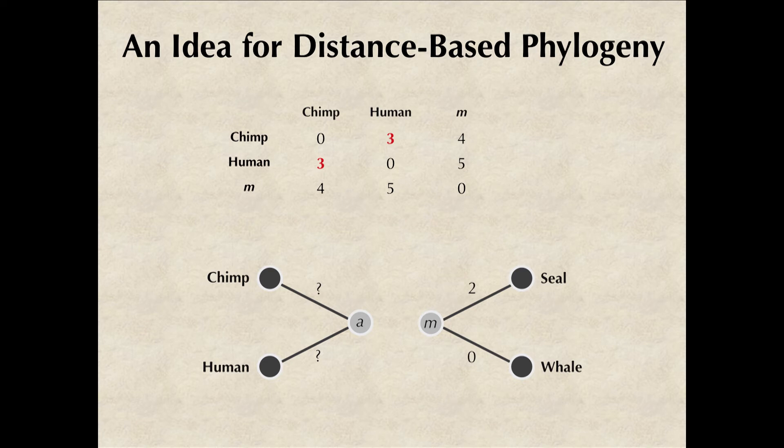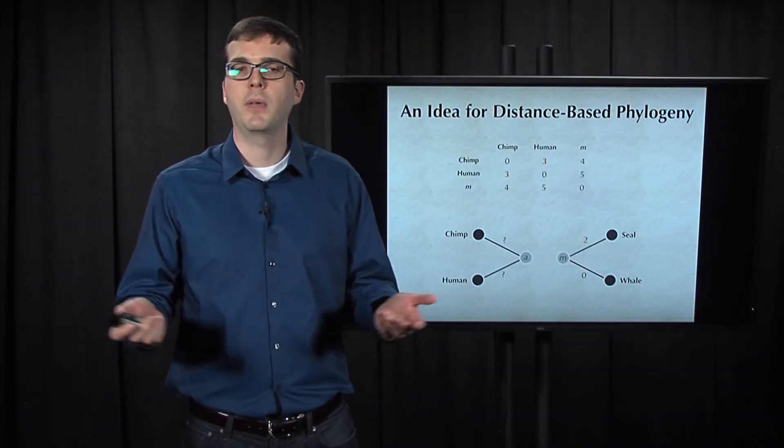Now we just apply the same rule recursively. So note that the minimum value of the matrix is 3, so chimp and human must be neighbors. So let's call their parent a.